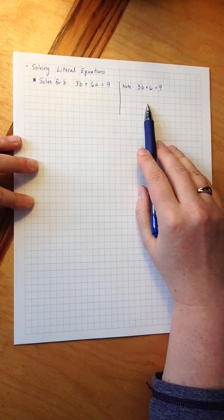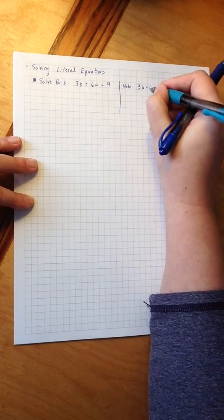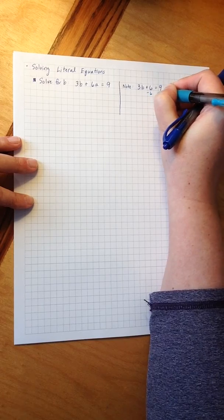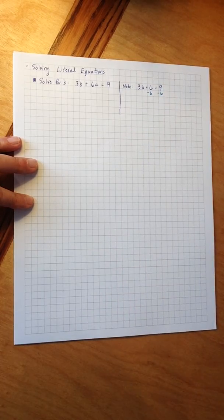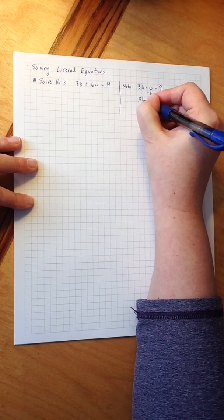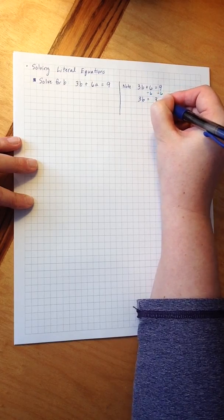We're very familiar with these types of problems, and we know that the first step here is going to be to subtract 6 on both sides. This gets me 3b equals 3.